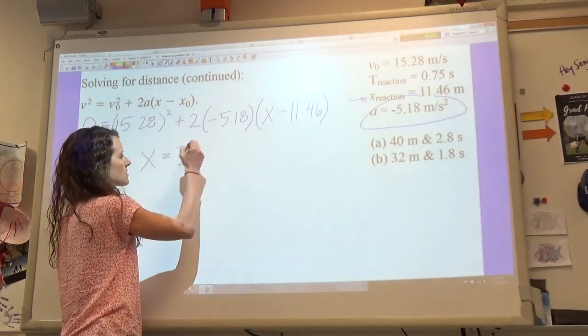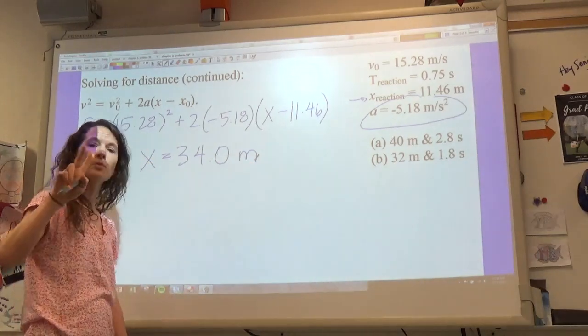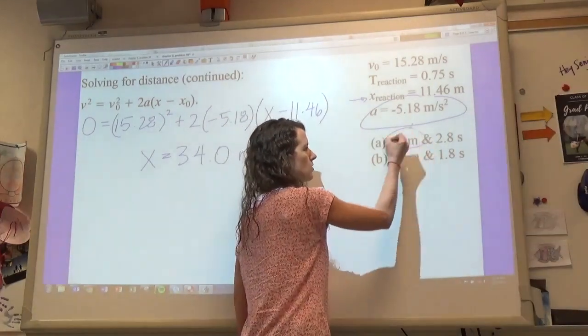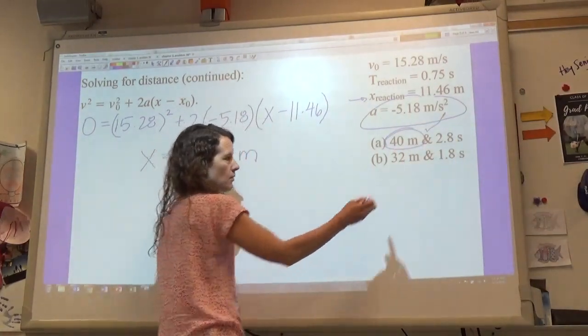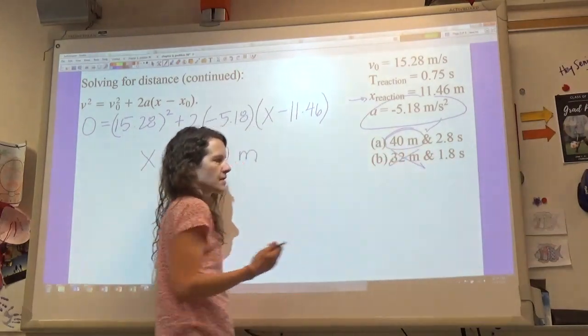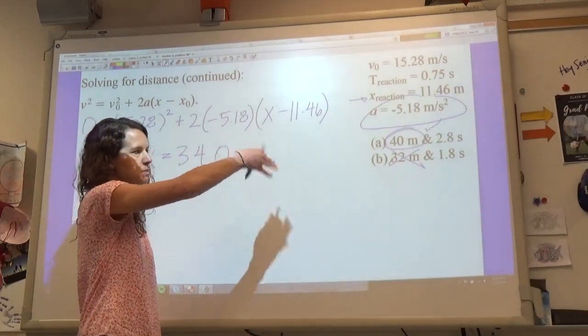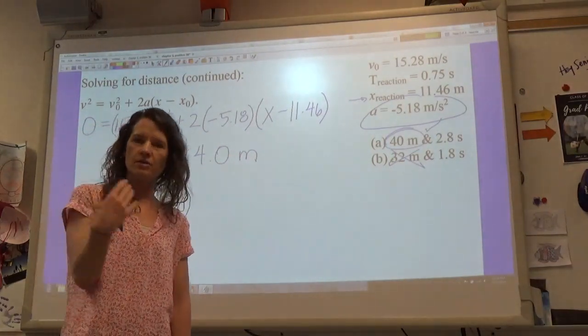So that actually solves two parts of the problem for us. That tells us that we are able to stop within 40 meters because we stopped in 34 meters, but we are not able to stop in 32 meters because we are now into the intersection a little bit. And so we've solved the first part of A and B.